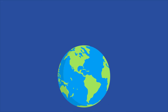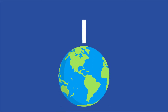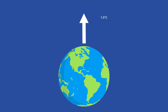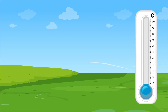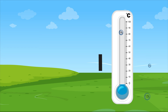For decades, scientists have warned about keeping the global temperature rise under two degrees Celsius by the end of the 21st century to avoid the worst effects of increased temperatures. However, recent considerations have shown that 1.5 degrees is the safer limit, especially for preventing sea levels from getting too high. This limit will be difficult to keep to, especially since the world already hit the one degree mark in late 2015.